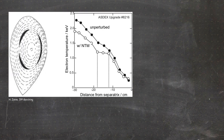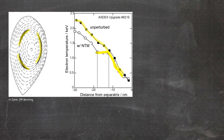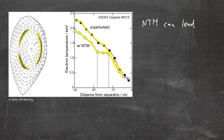An experimental example shows an island structure with three-fold symmetry — three islands on one flux surface — and the resulting electron temperature profile. Comparing the unperturbed profile with the perturbed profile measured across the o-point of the island, you can see the overall decrease in electron temperature. Due to the potentially self-amplifying mechanism, NTMs can finally lead to disruptions, which is why they are so dangerous.